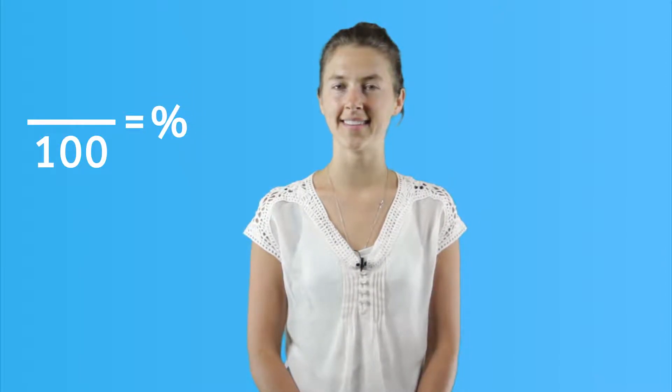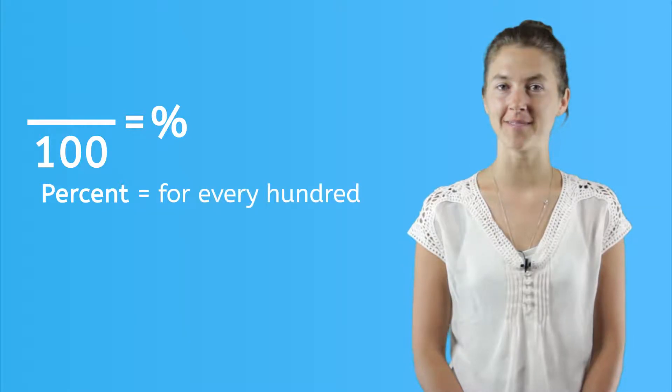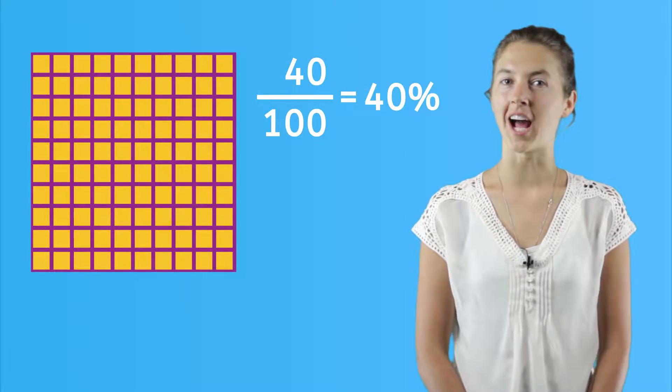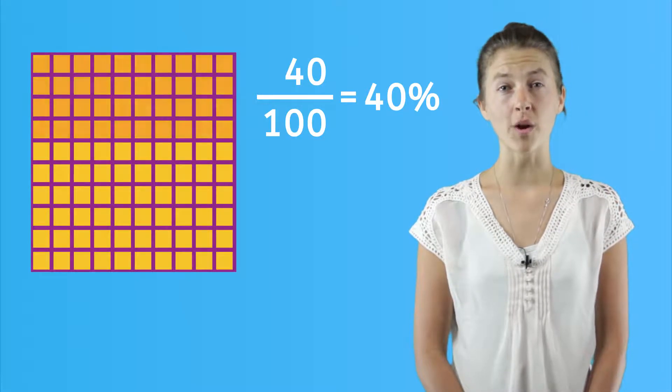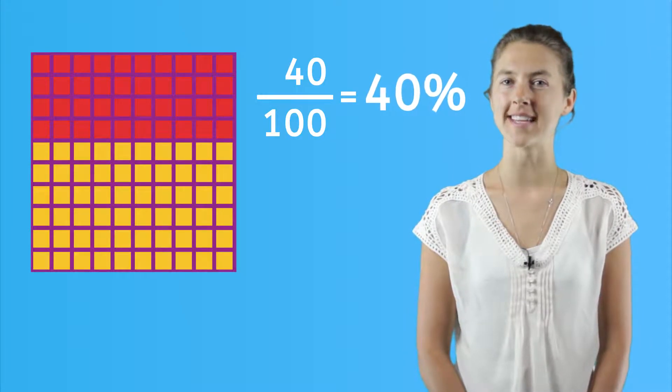Any fraction with a denominator of a hundred can be written as a percentage using the percent sign. Remember that percent means for every hundred. Here's an example: 40 over 100 is saying 40 out of every hundred parts, or 40 percent.